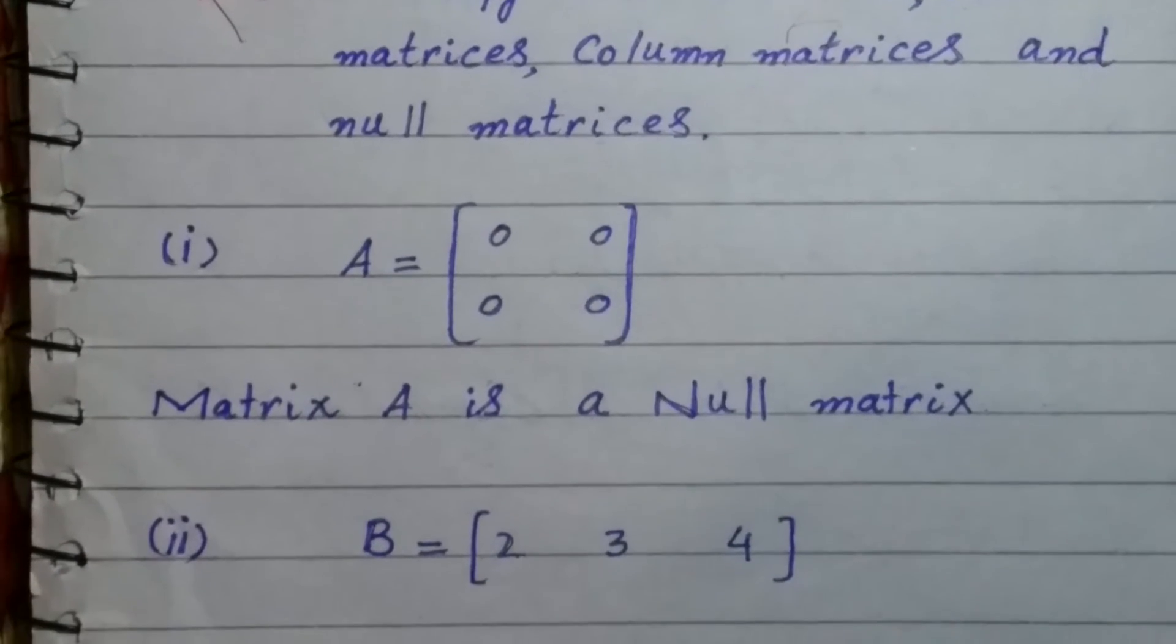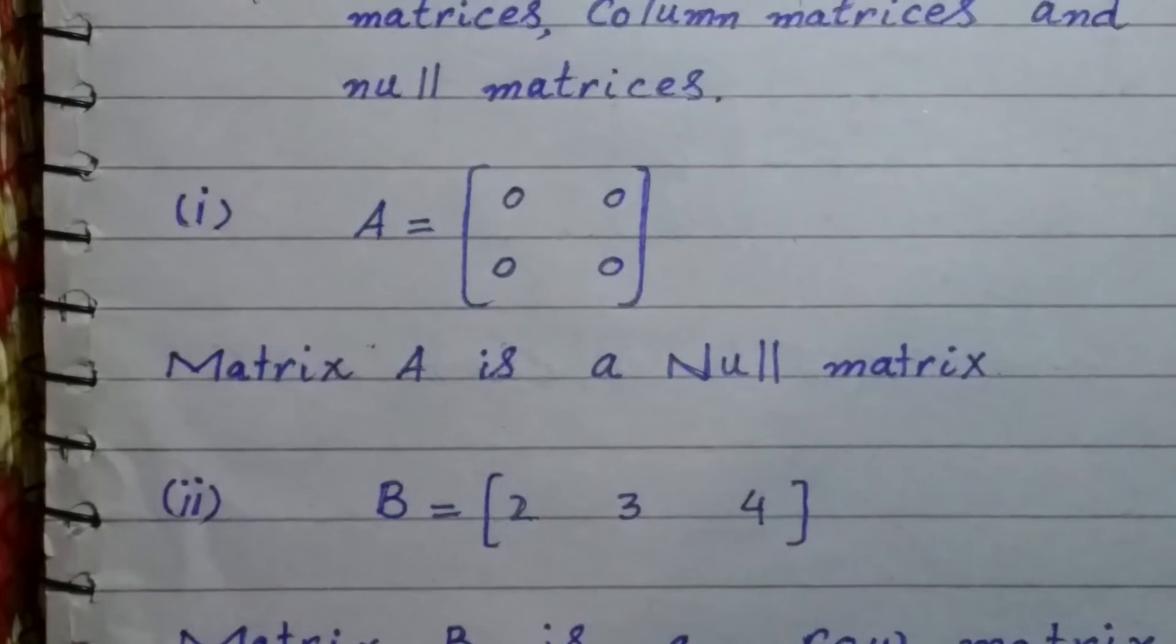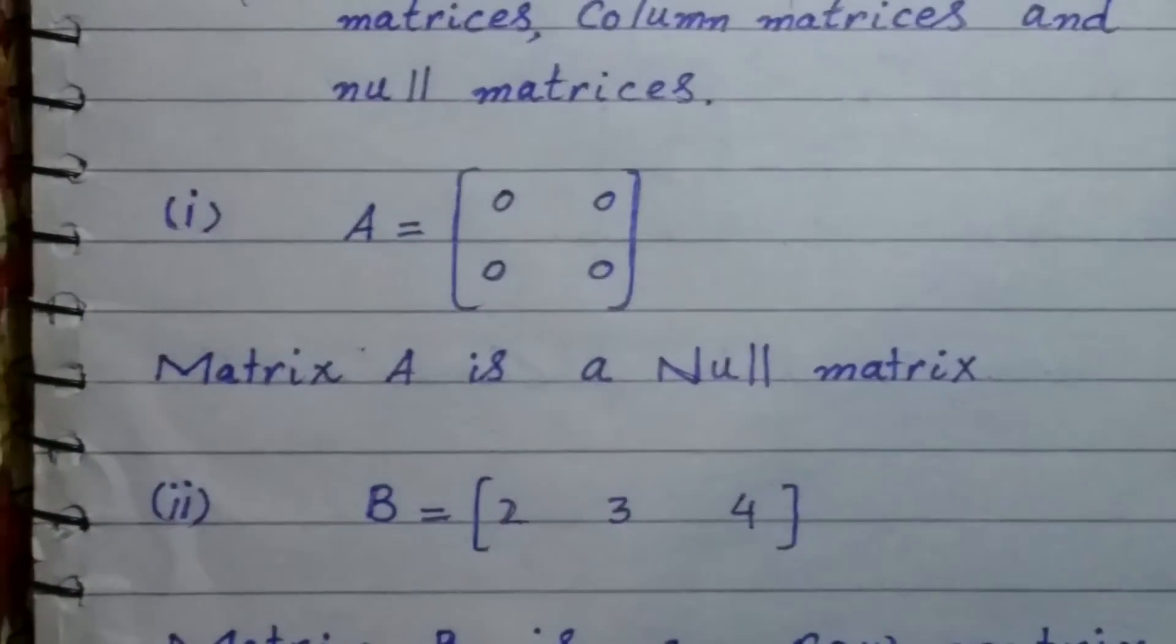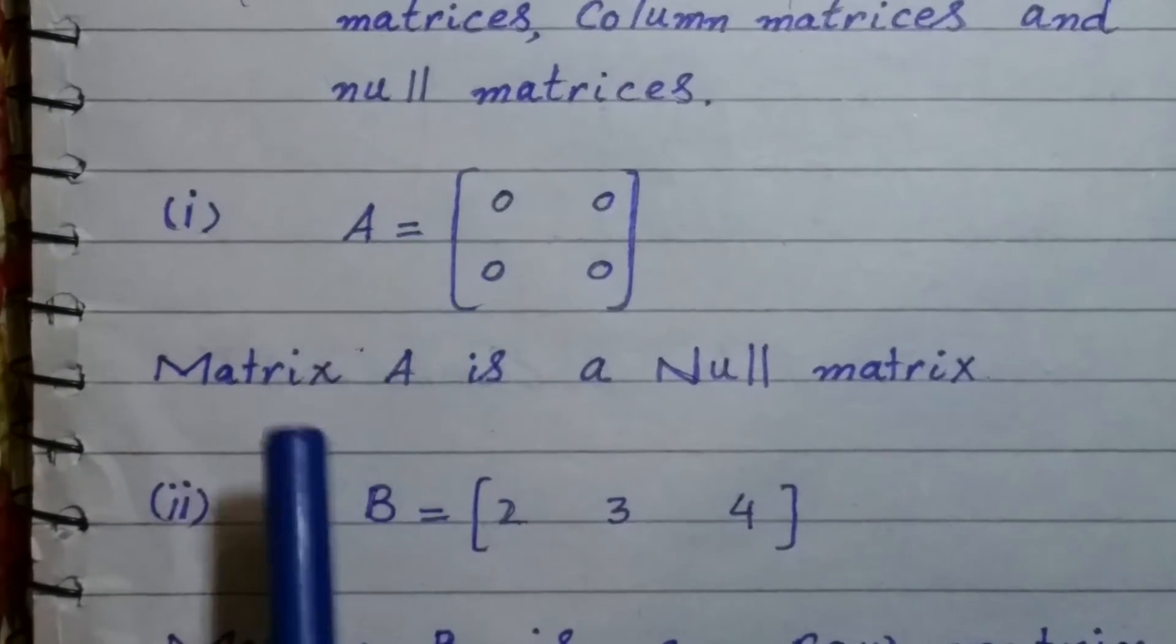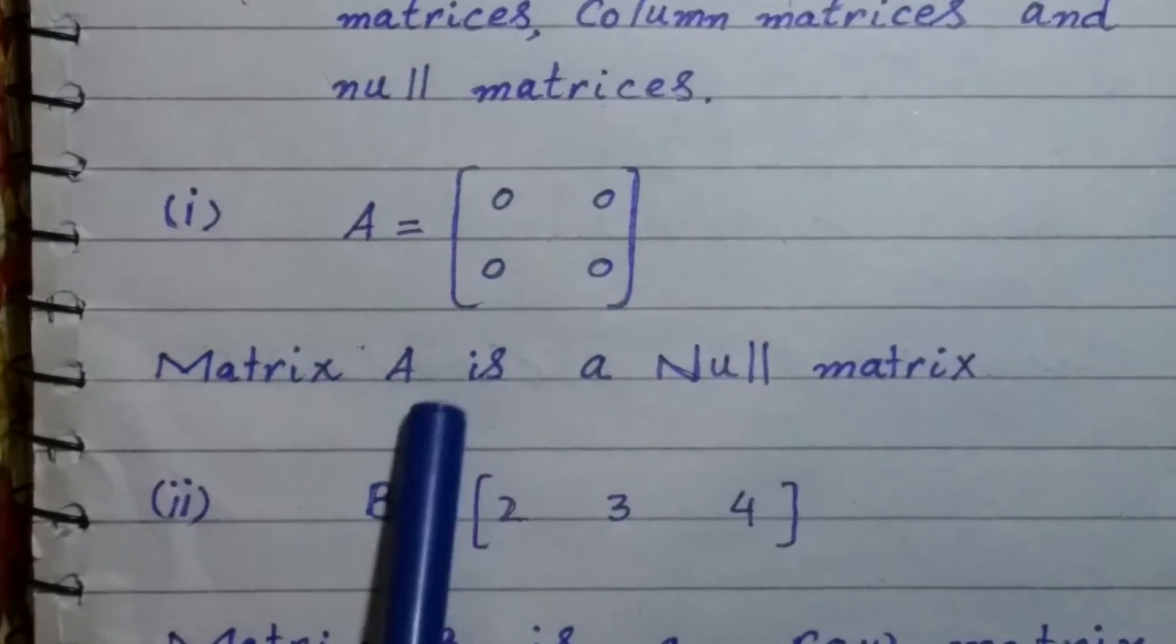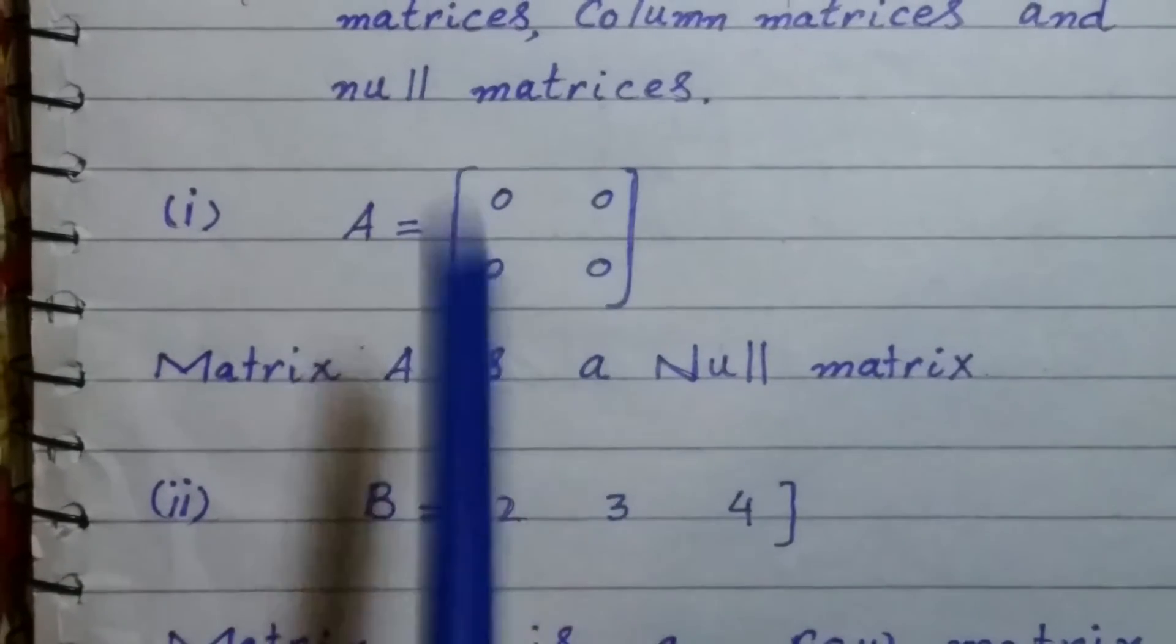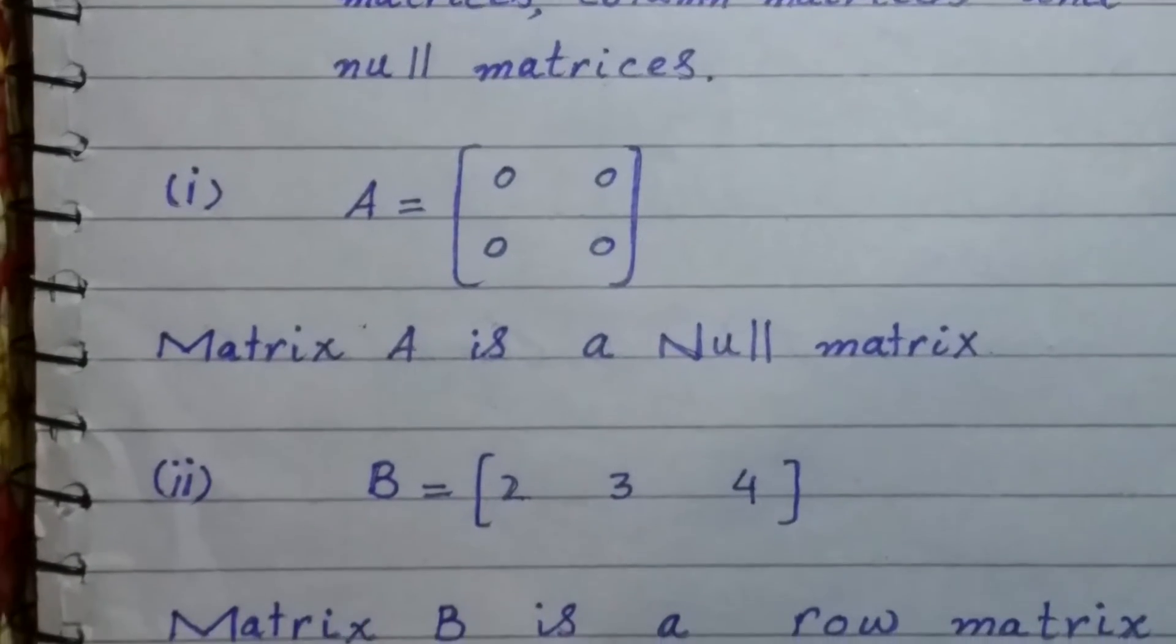A matrix in which all elements are zero is called a null matrix. So we can say that matrix A is a null matrix because all the entries in matrix A are zero, so it is a null matrix.